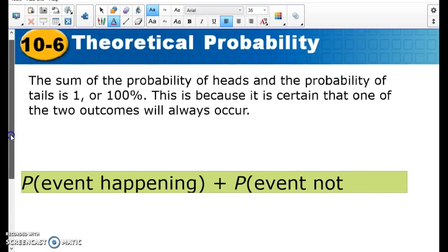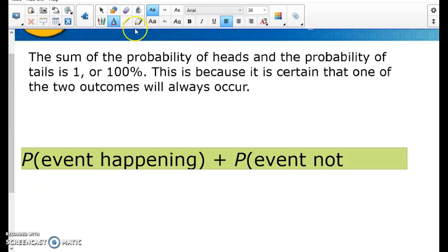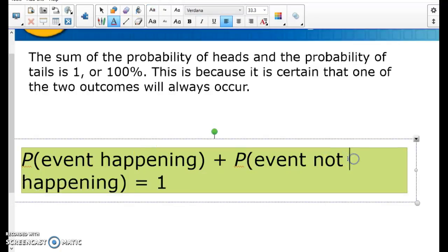And then remember, sometimes it's going to ask you what the probability of an event not happening is. So if you know the probability of an event happening, then you know the probability of the event not happening. And again, those should always equal one. If there's a 70% chance of snow, that means there's a 30% chance it's not going to snow.